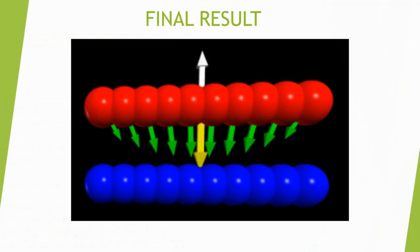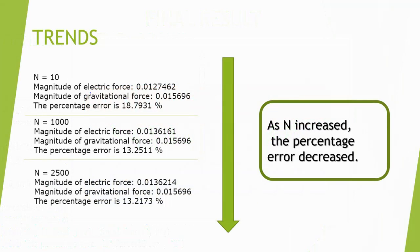Out of curiosity, the experimenter wanted to see how the electric force would change as the number of spheres n increased. As n increased, the percentage error between the electrical and gravitational force decreased, which makes sense as n approaches infinity, the magnitude of the electric force should approach that of the gravitational force.